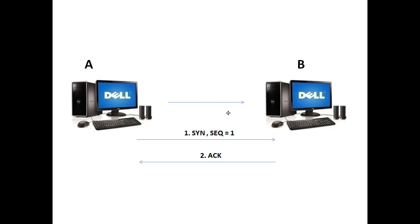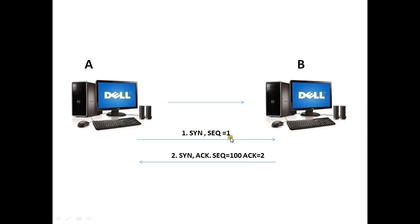So, with the Acknowledge bit, host B also generates its own SYN bit with its own sequence number, considered to be 100. Host A sends a SYN with sequence number 1, and host B replies back to host A with Acknowledge bit number 2 in response to sequence number 1, while also generating its own sequence number as 100.